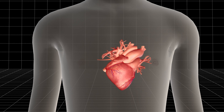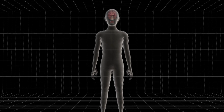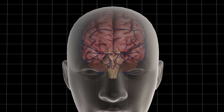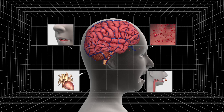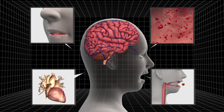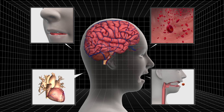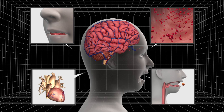Brain death occurs when the brainstem function is permanently lost. It can be caused when blood and oxygen supply to the brain is stopped as a result of a heart attack. The brainstem is the lower part of the brain that is connected to the spinal cord. It is responsible for regulating the most essential functions of the body including breathing, heartbeats, blood pressure, and swallowing.